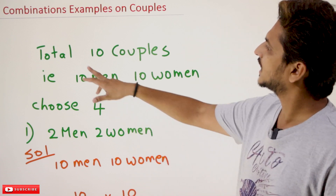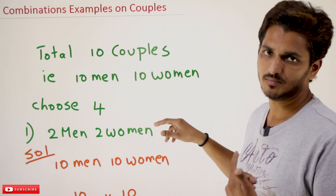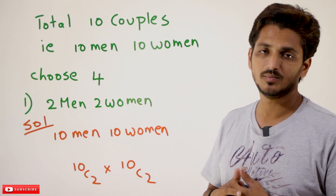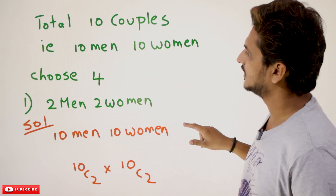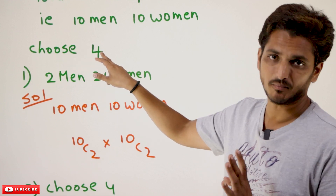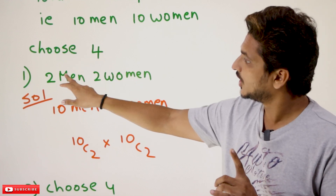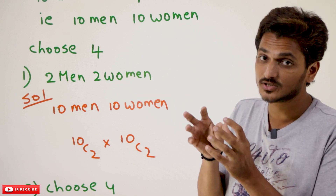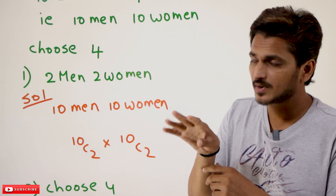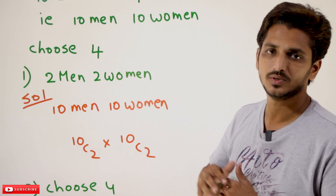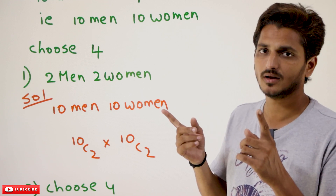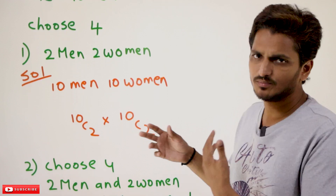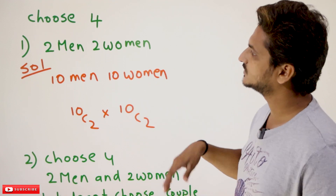Coming to today's class: it is given that 10 couples are available. 10 couples means 10 men and 10 women are available as our input. From that, we need to choose 4 of them. The condition is 2 men and 2 women should be there. You have to select a combination of 4 members where 2 men and 2 women are included. Total: 10 men and 10 women — 10 couples have been provided. This first example is very simple; from simple to complex, we move.